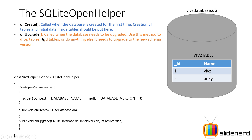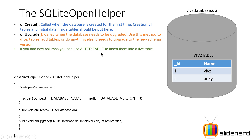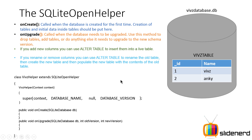The onUpgrade method gets called when the database needs to be upgraded — meaning you performed some changes to the structure of the database. You can drop tables, add tables, or do anything else needed to move to the new database schema. If you add new columns you can use the ALTER TABLE statement. If you rename or remove columns you can use ALTER TABLE to rename the old table and transfer data from the old table to the new one, including null values for newly created nullable columns.